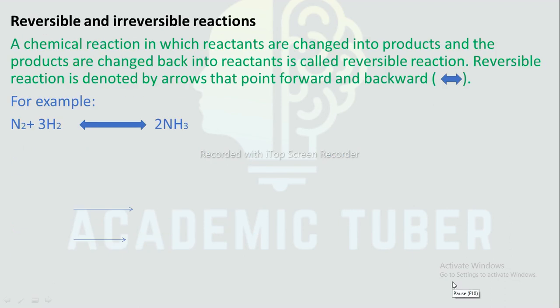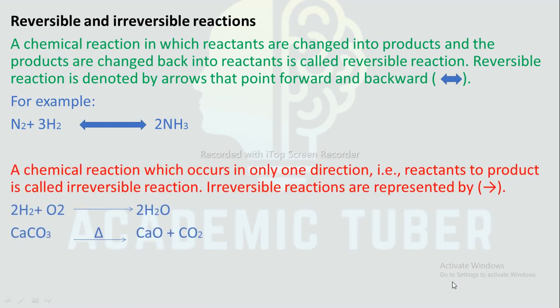Reversible and irreversible reactions: A chemical reaction in which reactants are changed into products and the products can change back into reactants is called a reversible reaction. It is denoted by arrows pointing both forward and backward. For example, N₂ + 3H₂ ⇌ 2NH₃. A chemical reaction which occurs in only one direction is called an irreversible reaction, represented by a single arrowhead. Examples: 2H₂ + O₂ → 2H₂O; CaCO₃ on heating → CaO + CO₂.